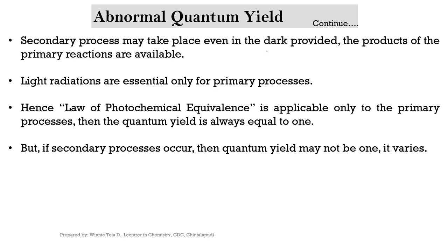The secondary process may take place even in the dark, provided the products of the primary reaction — that is, the activated molecules — are available. Only in the primary process does light absorption take place; in the secondary process, light absorption does not take place. Light radiations are essential only for the primary process. Hence, the law of photochemical equivalence is applicable only to the primary process, and the quantum yield is always equal to 1 for the primary process. Whether the quantum yield is high or low depends only on the secondary process.